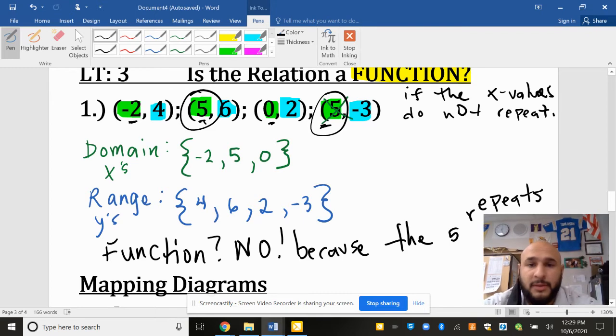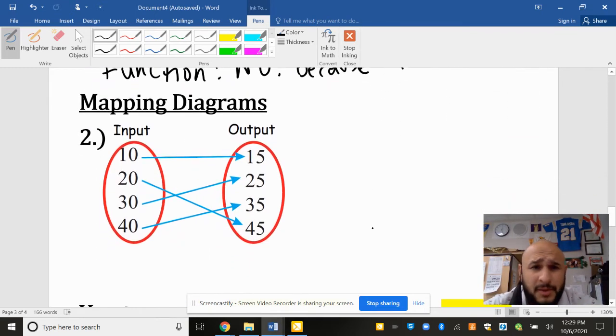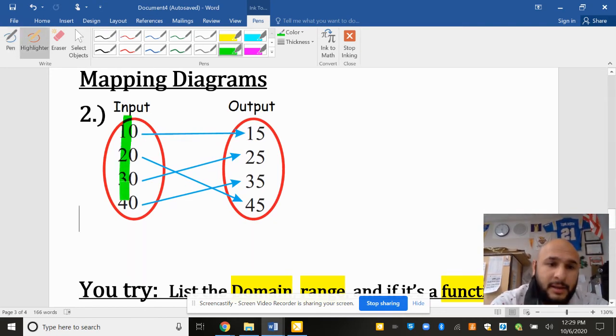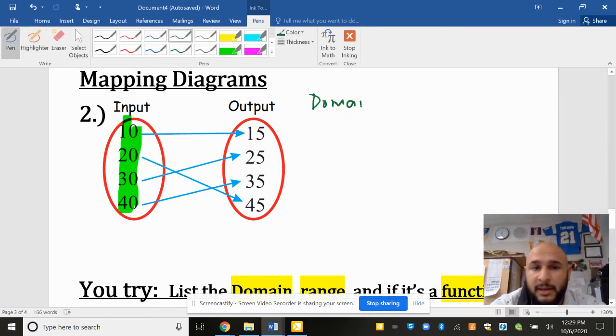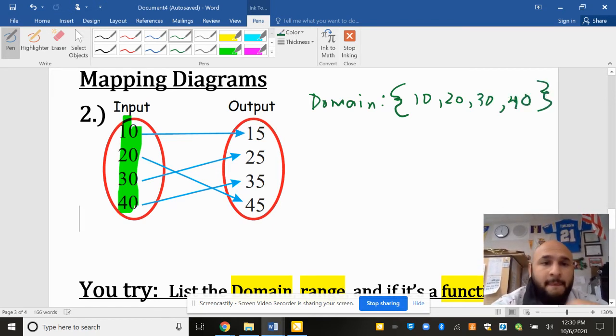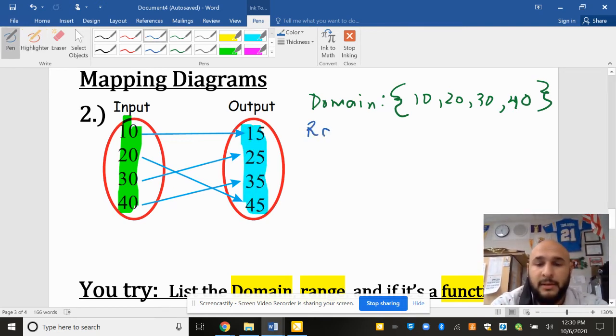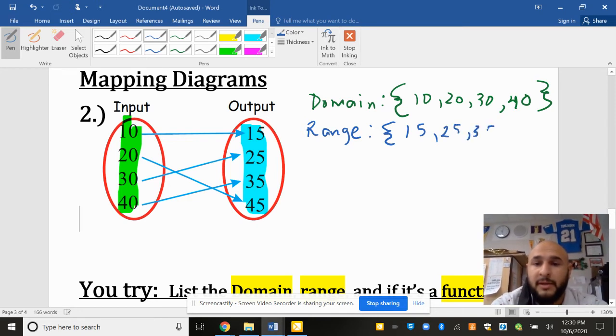All right. Let's move on to our second example here. Using a mapping diagram, I'm going to start by listing all my domain. My domain, again, is my input values or my x values, which are 10, 20, 30, and 40. And then my range is going to be all my y values or my outputs, which are 15, 25, 35, and 45.